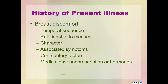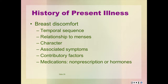If the presenting chief complaint is breast discomfort, think about the temporal sequence: was the onset gradual or sudden? The length of time the symptoms have been present. Do the symptoms come and go or is it always present? Is the discomfort related to menses? What is its timing and severity? Utilize your OLD CARTS acronym — onset, location, duration, character, aggravating, alleviating or associated factors, radiating pattern, timing and severity. Also ask what kind of medications the patient is taking, including hormones, bioidentical hormones, and prescription and non-prescription medications.